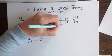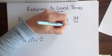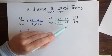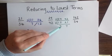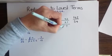3 fits into 12 four times and into 21 seven times. Once again, 7 is a prime number. And since it does not fit evenly into 4, this fraction is fully reduced.